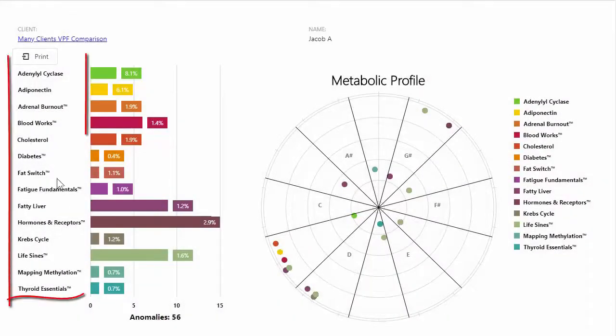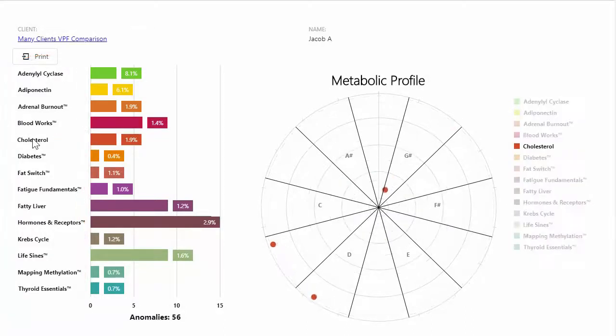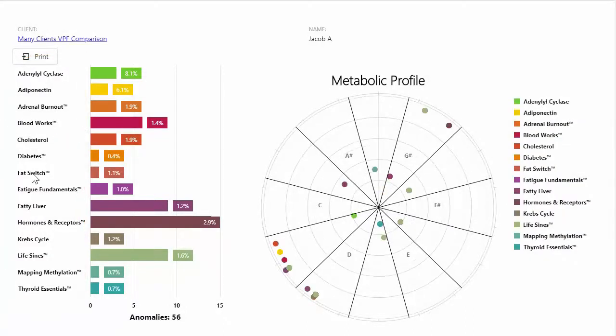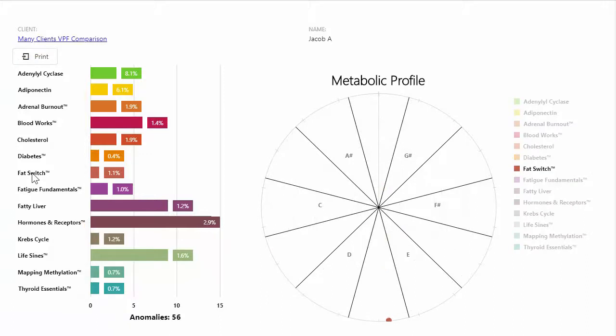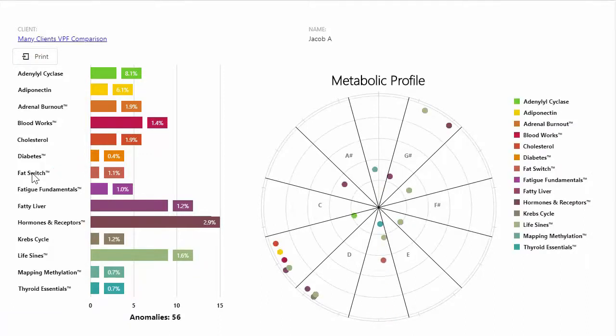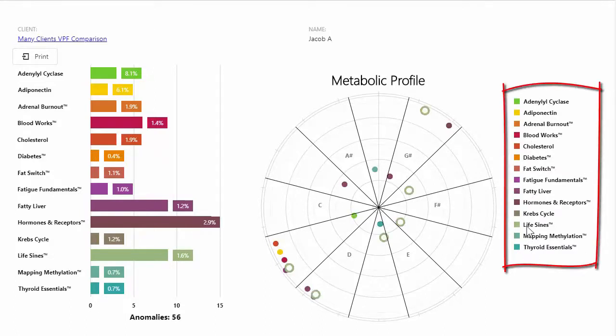The left column lists templates containing anomalies. One click on the name isolates their anomalies in the chart. A second click reactivates all unselected templates. Templates can also be controlled via the legend.